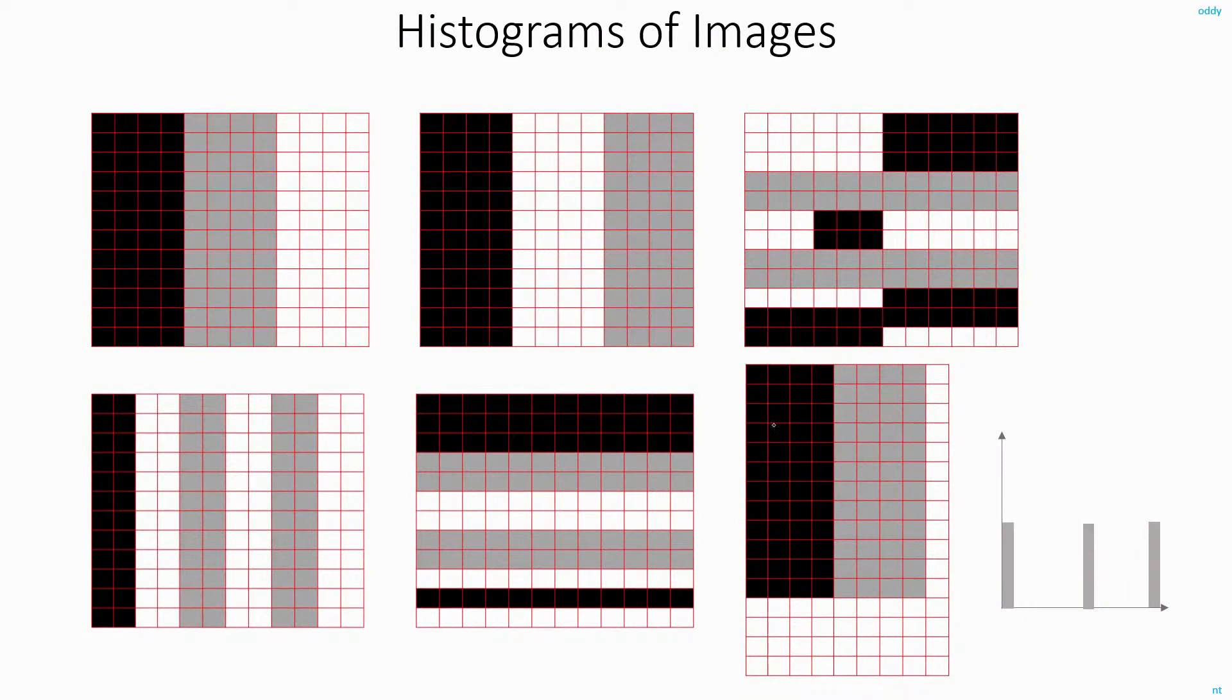And so for all these images in this slide, the histogram will be same. You will have 48 pixels of intensity value of 0, then 48 of 150 and 48 of 255. Also note that, it doesn't matter even if I change the aspect ratio of this image from 12x12 to 16x19 or actually to any other aspect ratio. As long as the number of pixels here remains the same, the histogram will be the same.